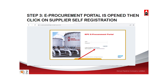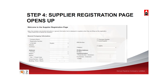For first timers, you will note that we have two tabs there — one for the user, and the second one is password. Below it, we have log on, then get support, and then new supplier. Go straight to new supplier self-registration and the registration page will open up.